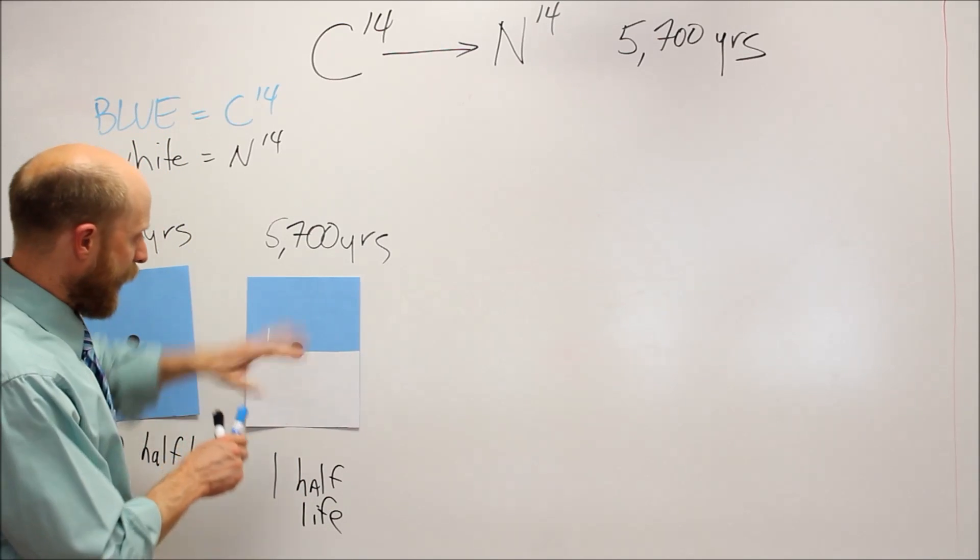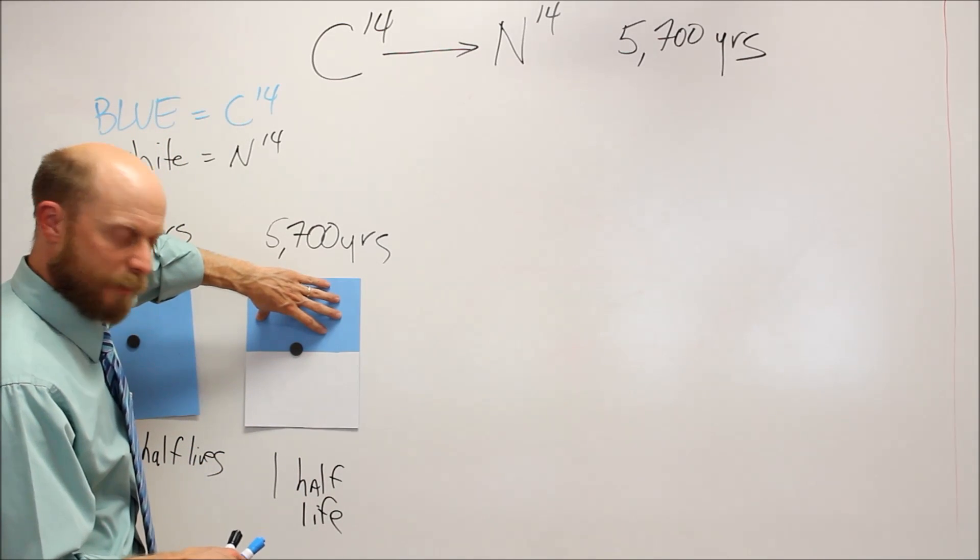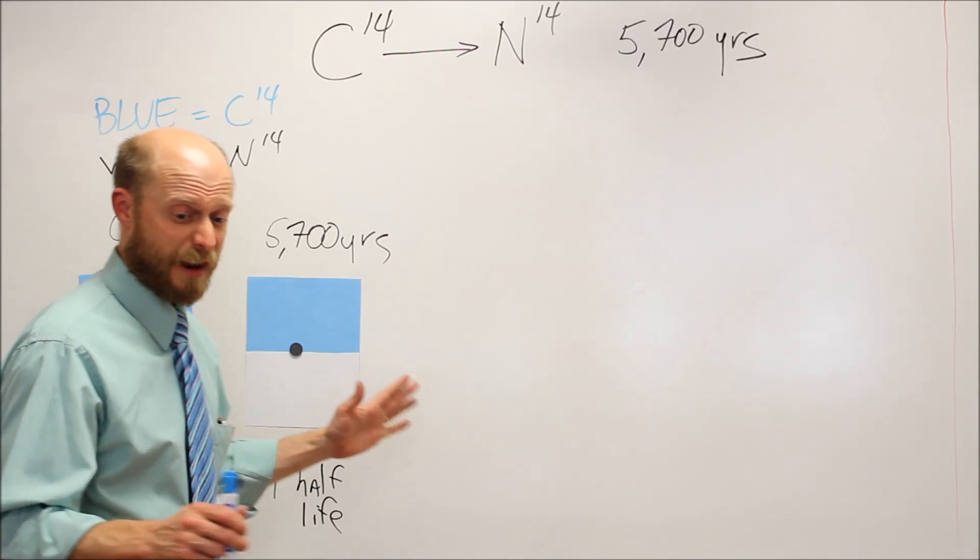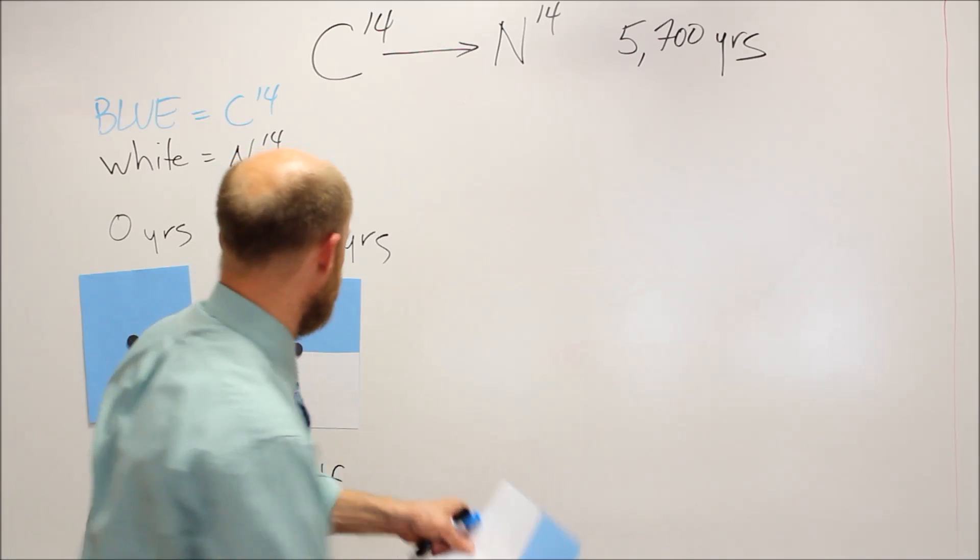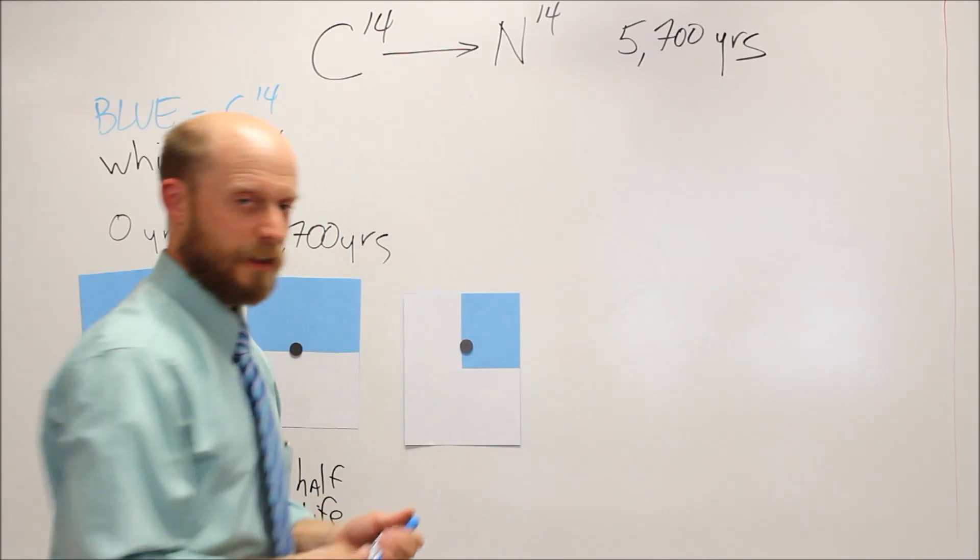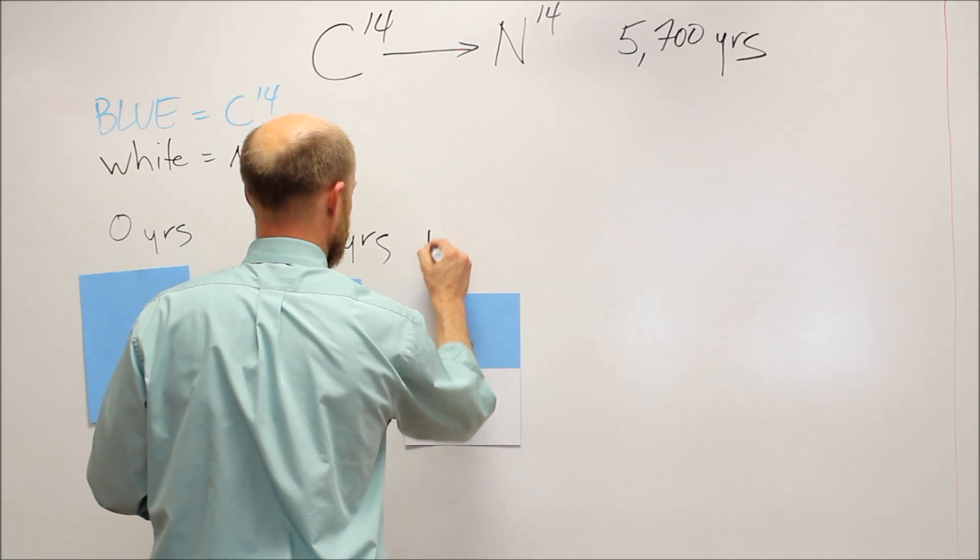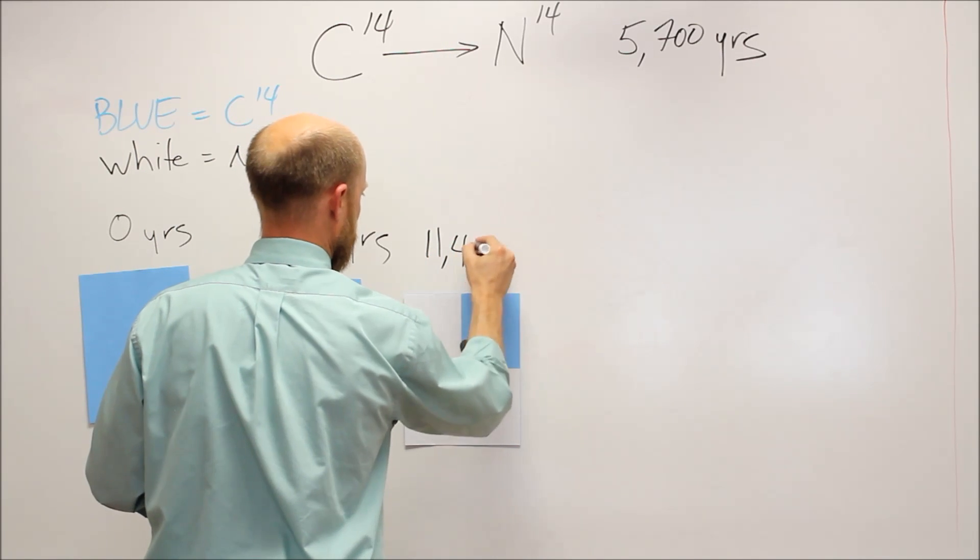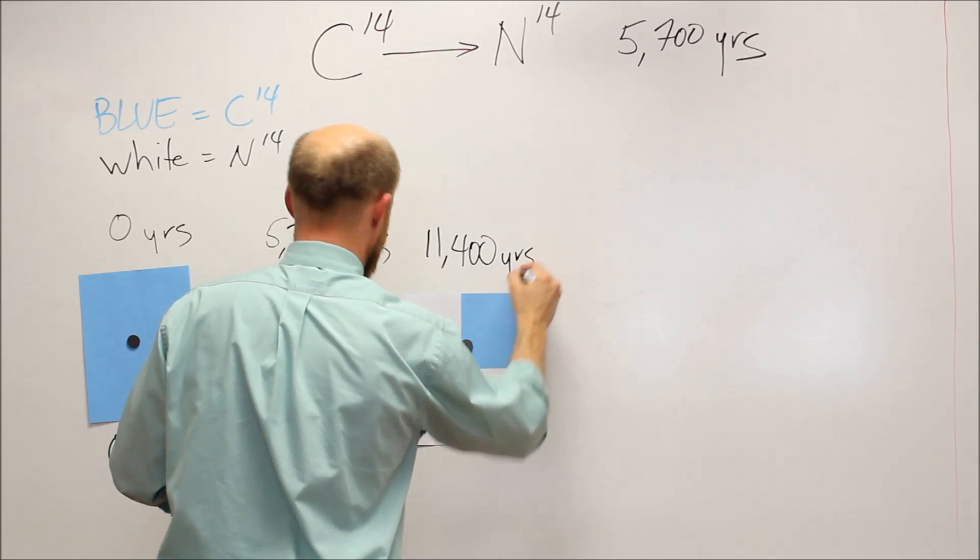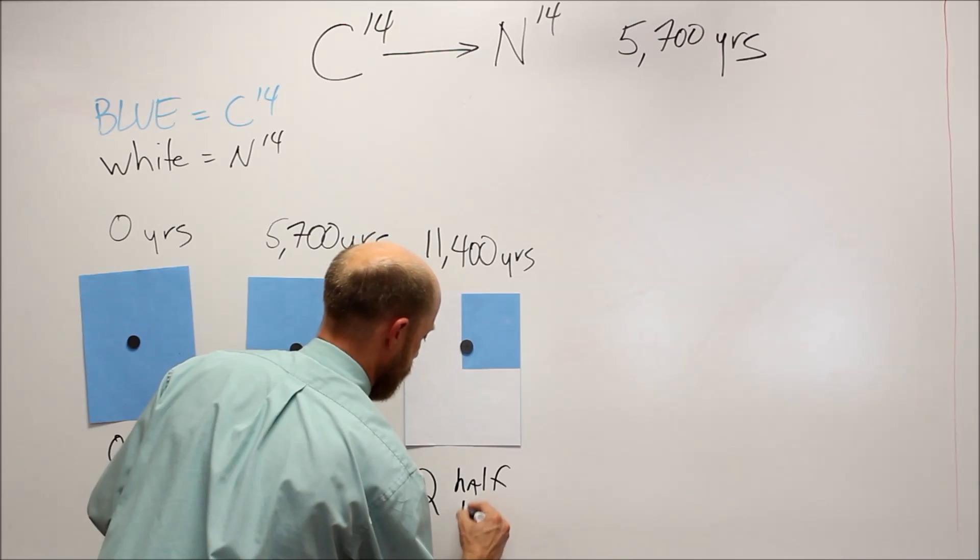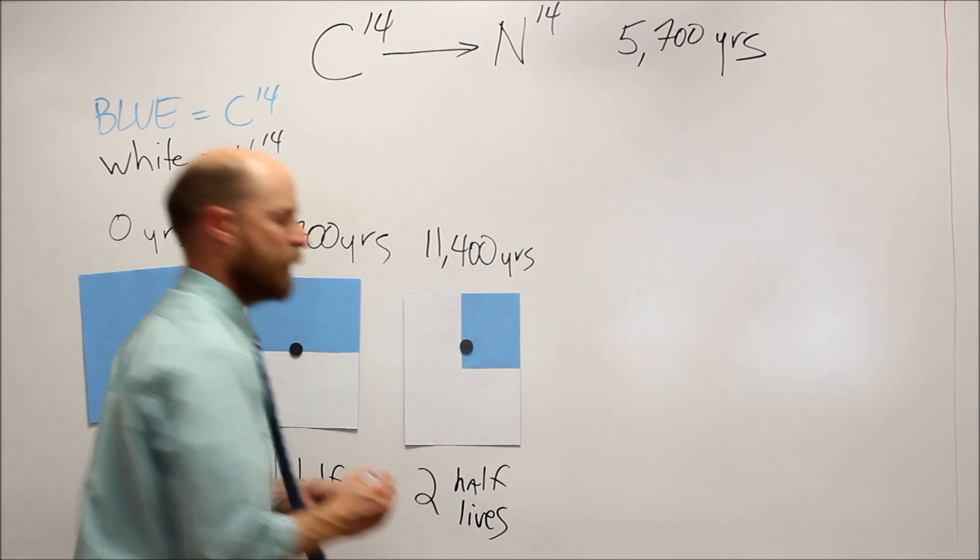Another half-life goes by. So, half of the carbon-14, the blue you have here, will become nitrogen-14. That will stay nitrogen-14 forever. It's stable. It will look like that, and now we're talking another 5,700 years. So, this is the total time here that we're representing is 11,400 years, and then that's two half-lives have passed.